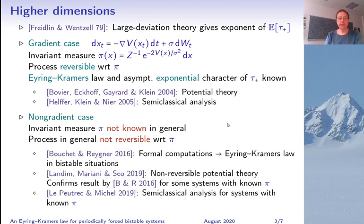Nevertheless there have been some results. Boucher and Reinier did some formal computations that suggest an Eyring-Kramers law in some bistable situations. Landim, Mariani and Seo developed non-reversible potential theory for this kind of systems, and in particular they were able to confirm the results by Boucher and Reinier for some particular systems for which you know the invariant measure explicitly. And also Le Peutrec and Michel developed semi-classical analysis for this kind of systems with explicitly known invariant measure.